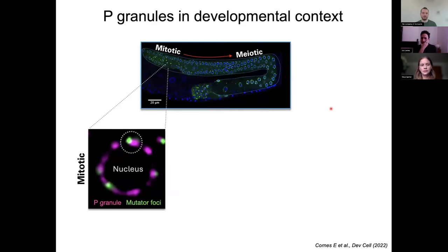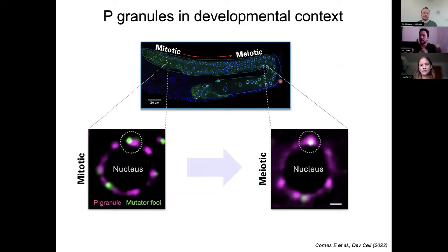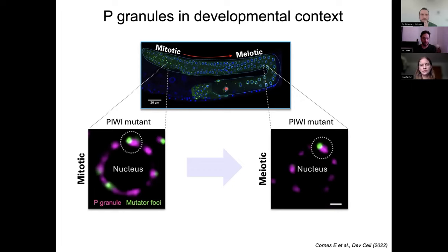So we wanted to address this, and we quantitatively tracked these condensate pairs along germ cell differentiation, looking at the problem from the condensate scale. Something we observed is that during spermatogenesis meiosis, P. granules and mutator foci mix together. This condensate mixing correlates in space and time with the cascade of molecular reactions leading to piRNA-mediated repression of spermatogenic gene transcription. Moreover, this mixing does not happen in the absence of piRNAs, suggesting a functional link between dynamic changes in germline condensate interactions and piRNA pathway activity.